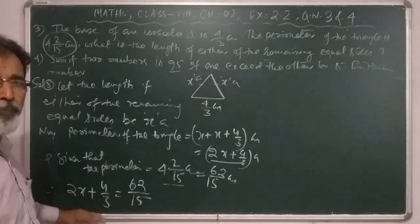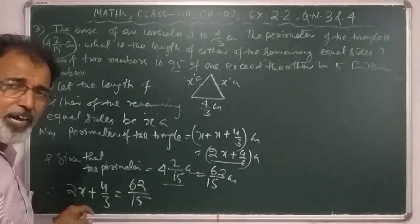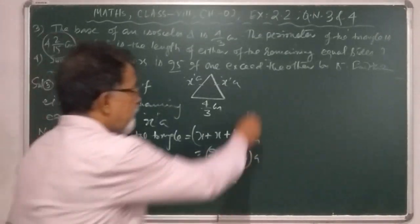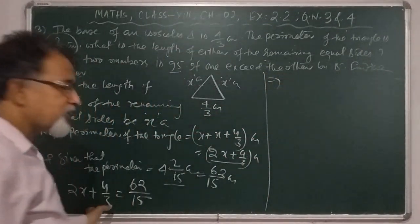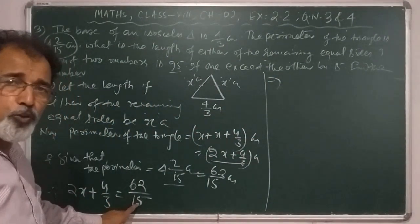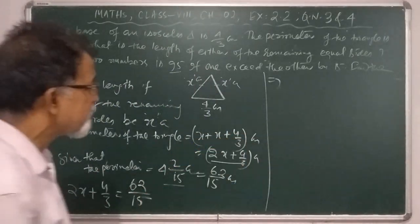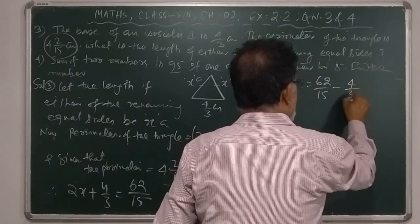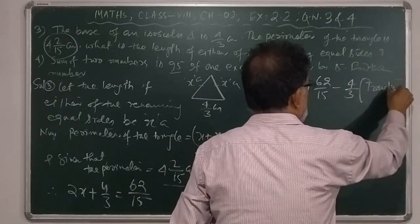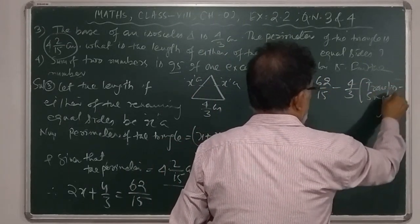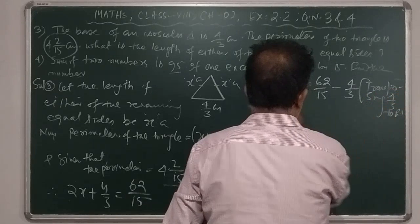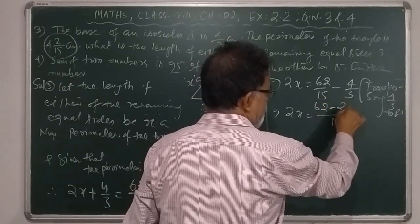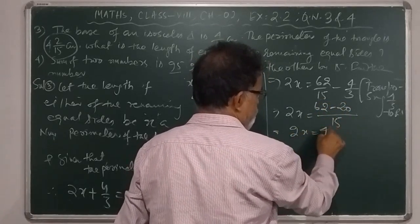We already know how to find the variable x. This equation has three terms: a variable term and two constants. The constant on the left hand side will be transposed to the right hand side. Transposing 4/3 to the RHS: 2x equals 22/5 minus 4/3. Taking the LCM of 5 and 3, which is 15: 2x equals 66/15 minus 20/15, so 2x equals 46/15.